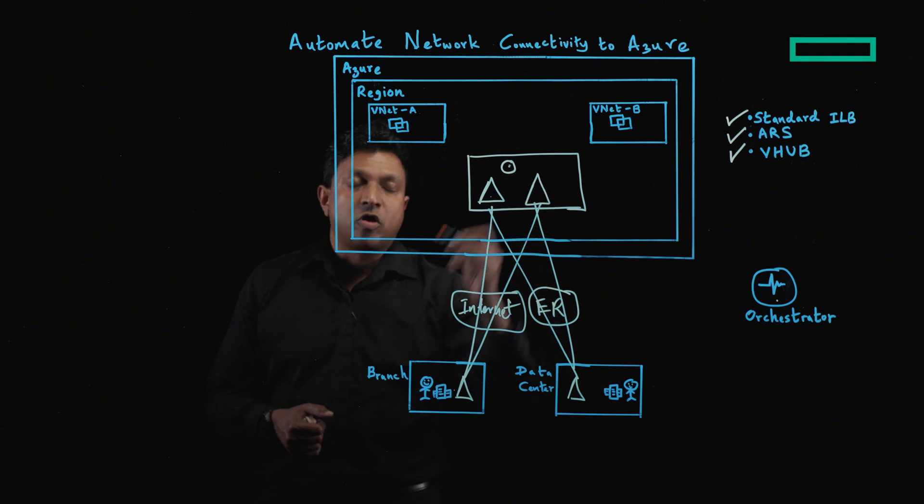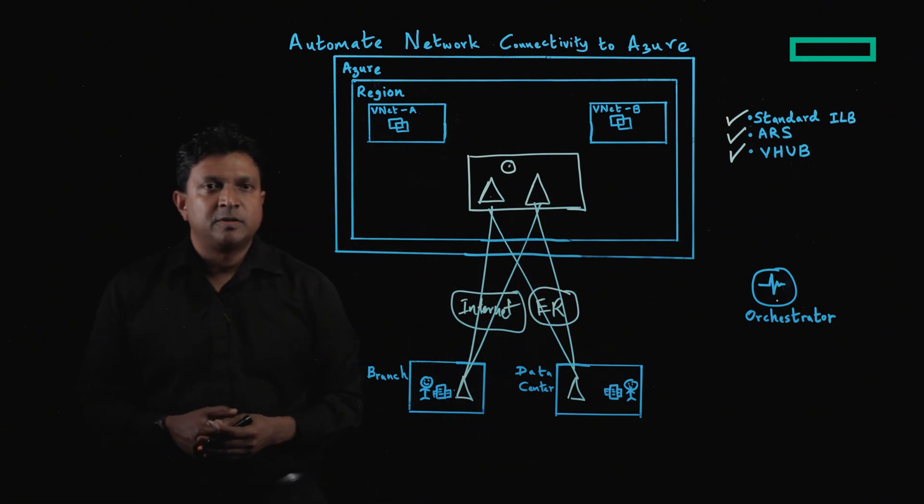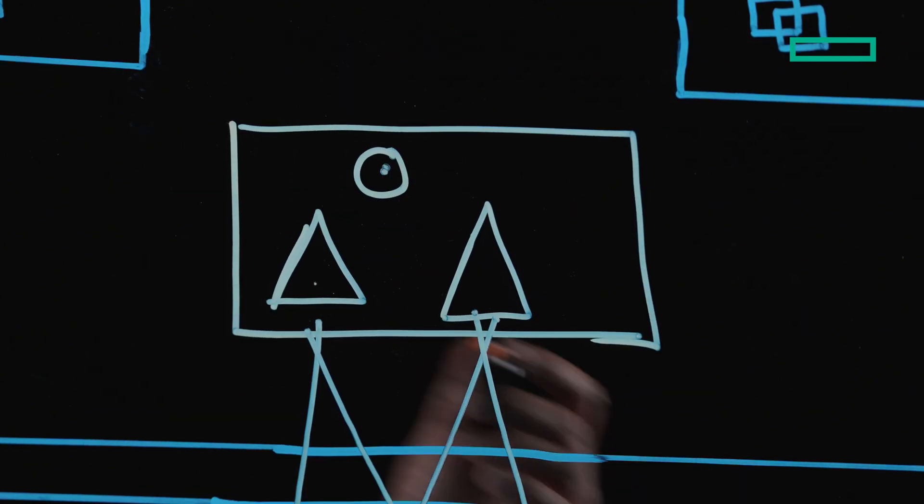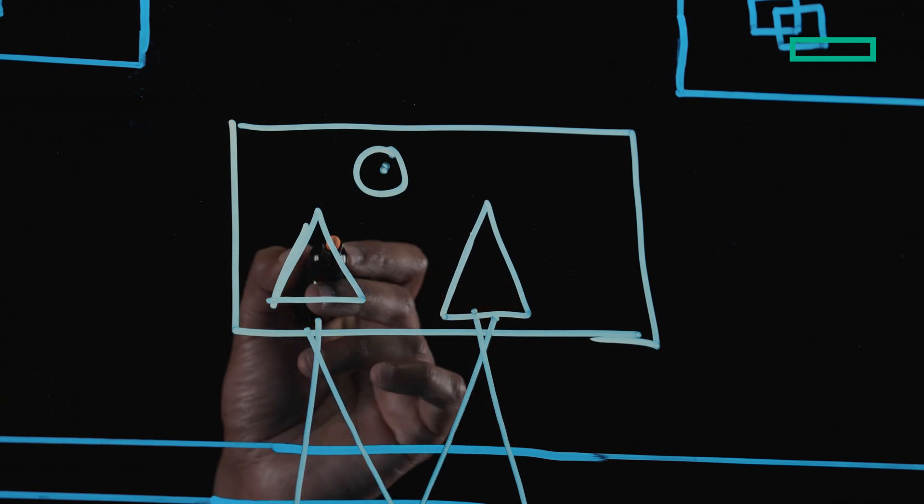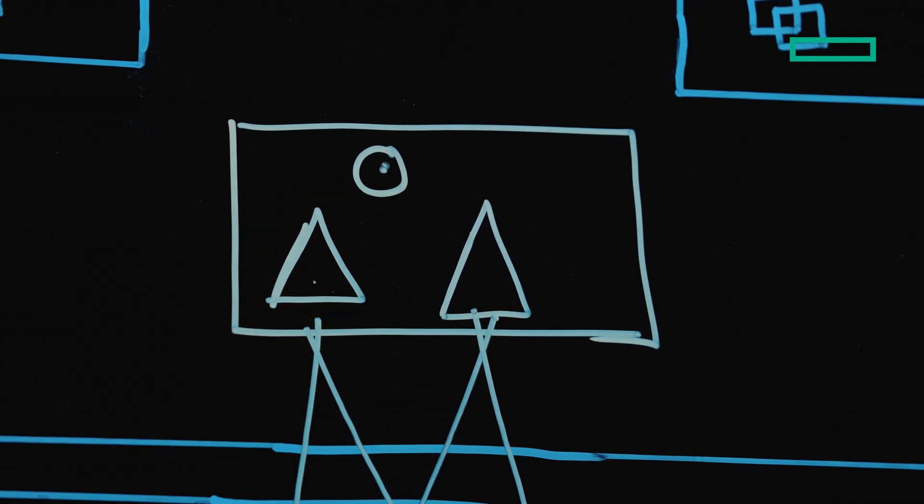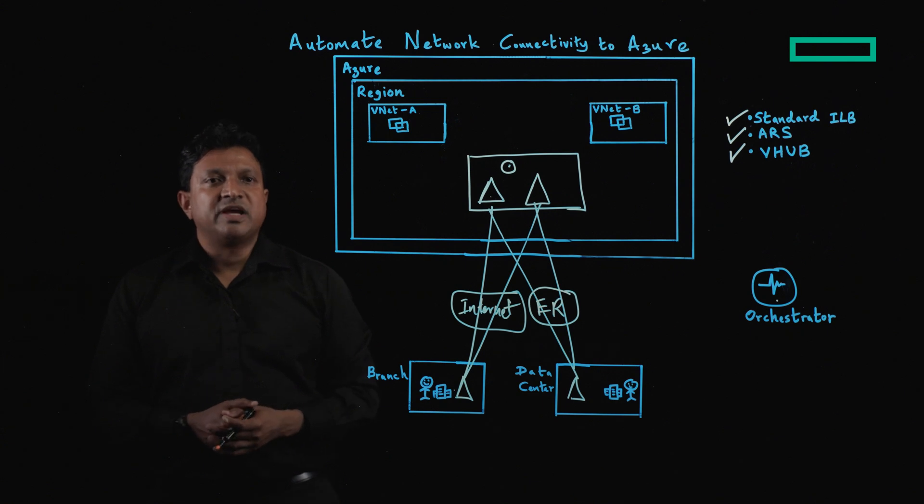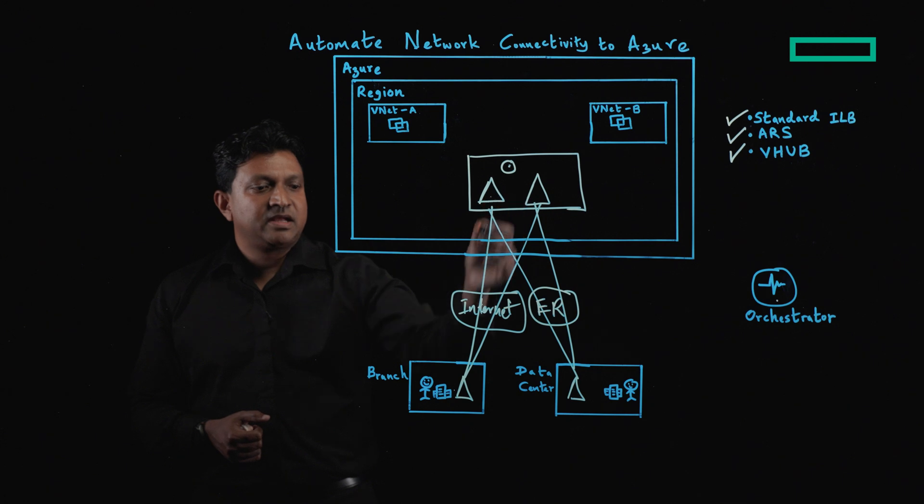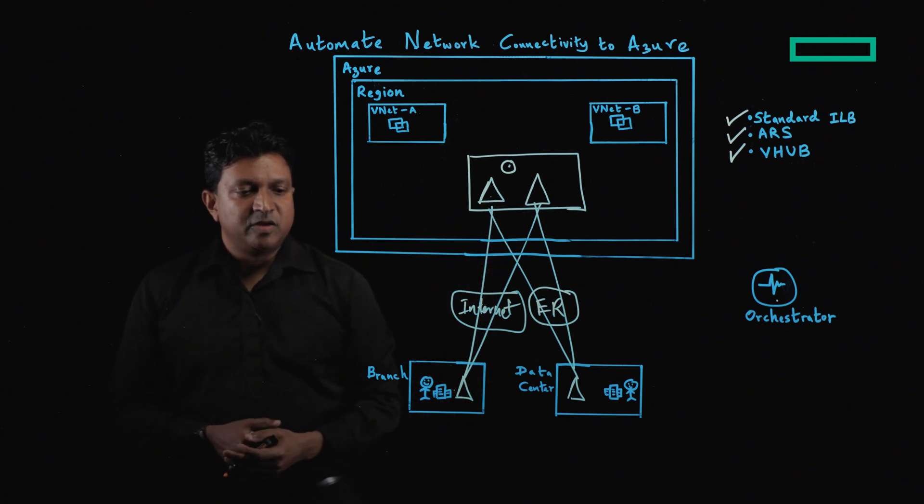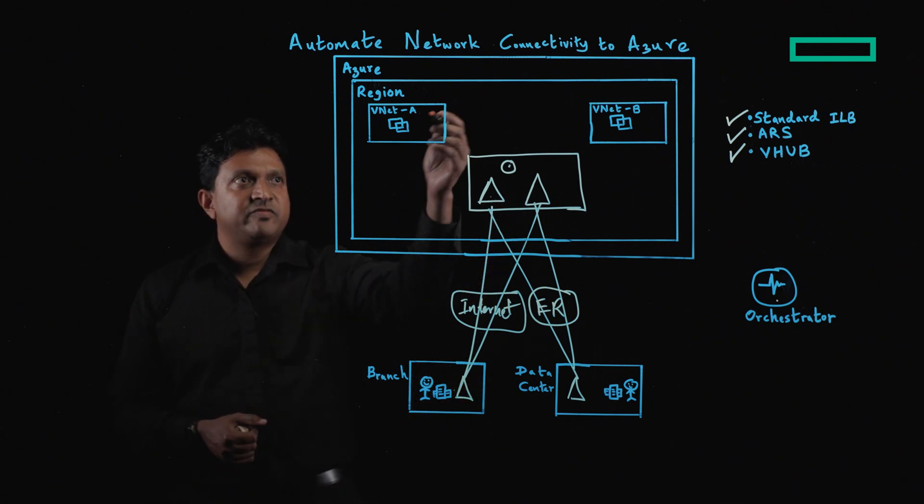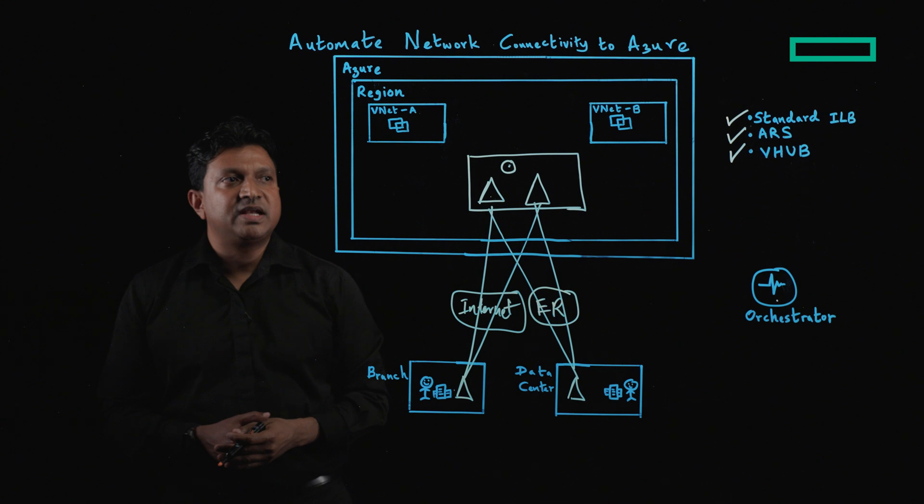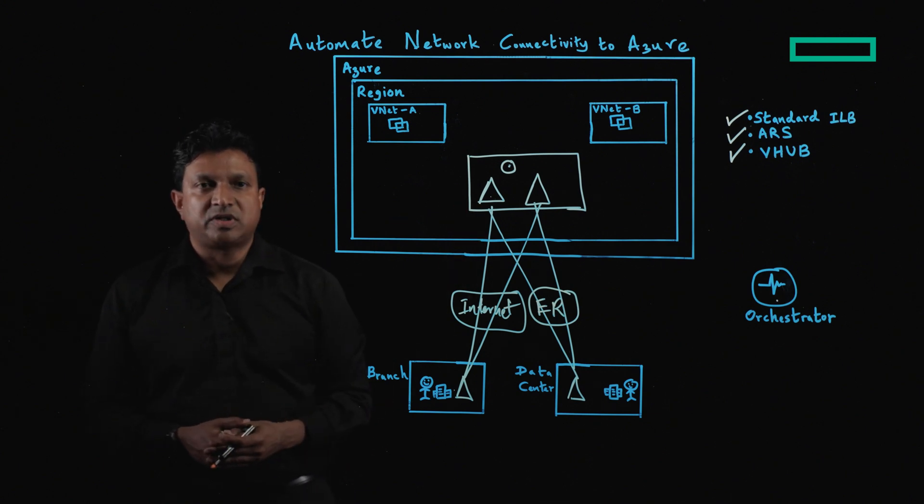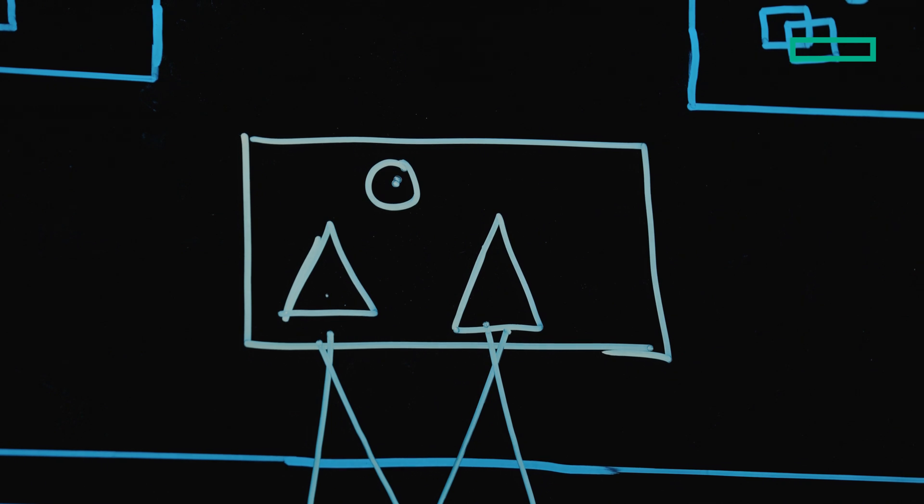or if you have already created an Azure route server, the orchestrator can allow the EdgeConnect appliances in the Transit VNet to establish BGP with that Azure route server. The benefit with the Azure route server is that it supports BGP, and whenever you add a new branch office or whenever you add a new spoke VNet into the cloud, you don't have to make any changes to the EdgeConnect route table because BGP will advertise the route for you.